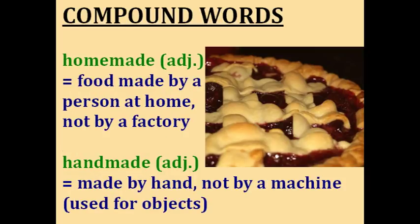How would you like some homemade cherry pie? The adjective homemade means something — usually a food — was made by a person at home and not by a factory or big company. If your mother makes it at home or you make it directly from the ingredients, then it's homemade. Similar to that is handmade, which describes something made by hand, not by a machine. The difference is that we usually use homemade for food and handmade for objects like clothing or decorative items.